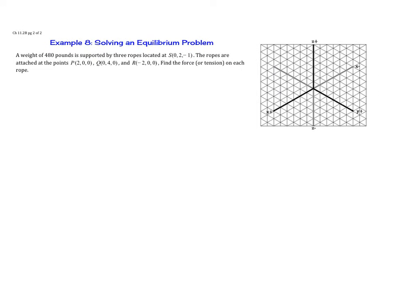Let's graph what we know so far. S is the weight we have, located at x=0, y=2, and z=-1. Here is our weight, and we'll call that S. The weight is going down, so that is actually negative 480. Written in component form, that's <0, 0, -480>.